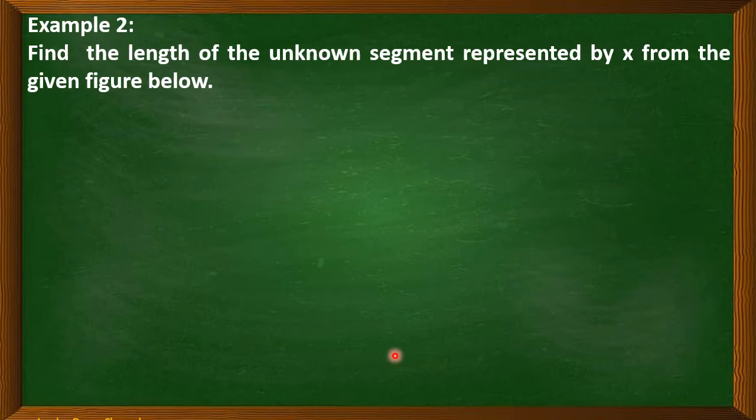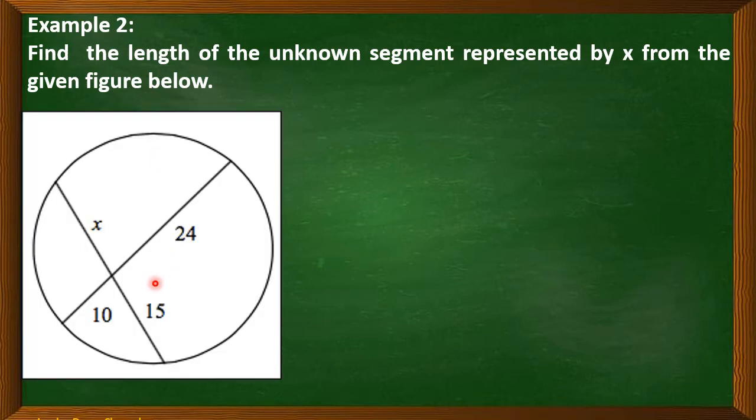Example number 2. Find the length of the unknown segment represented by X from the given figure below. So we have to multiply 15 by X, and that is equal to 10 multiplied by 24. So 15 times X is 15X. 10 times 24 is 240.